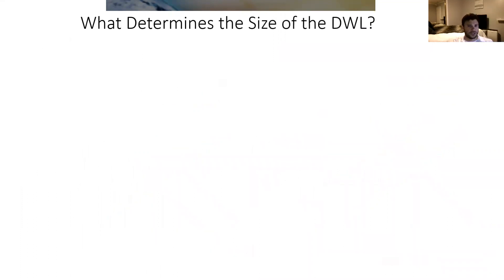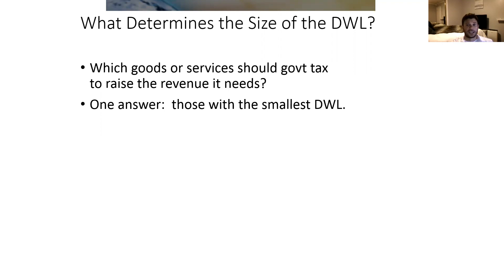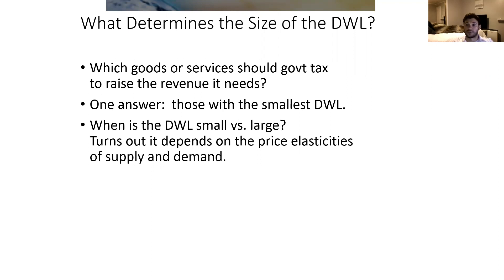What we're going to think about next is what determines the size of the deadweight loss. This is important from a taxation perspective because it gives us a methodology for thinking about guidelines for which industries we actually want to levy taxes on if we have to raise revenue for goods and services. One approach is to try to tax markets where we would do the least amount of damage — those markets that would have the smallest deadweight loss resulting from the implementation of a tax. Your intuition is probably already telling you that this may have something to do with the slopes of the demand and supply curves, those relative elasticities — and you would be correct.